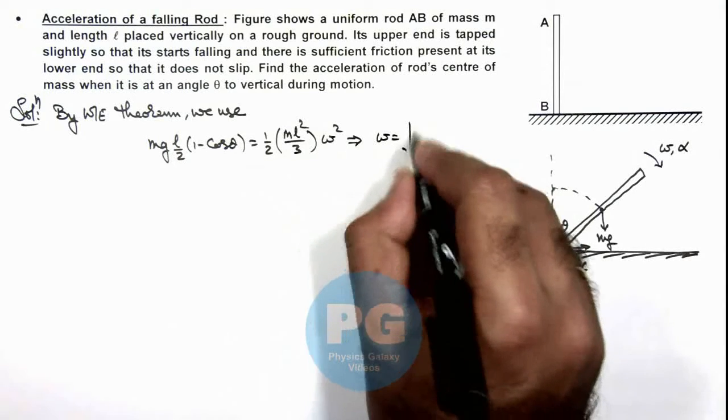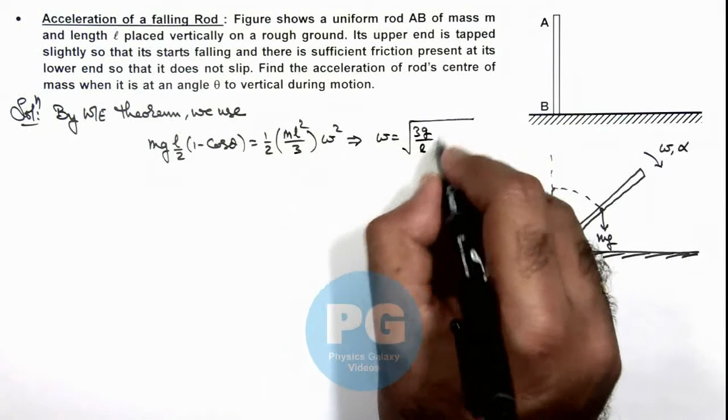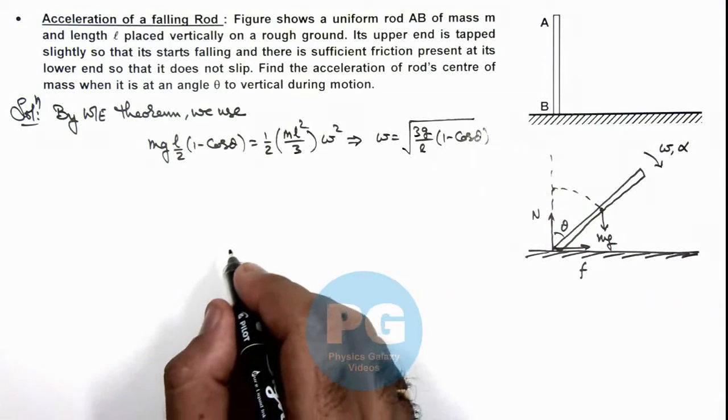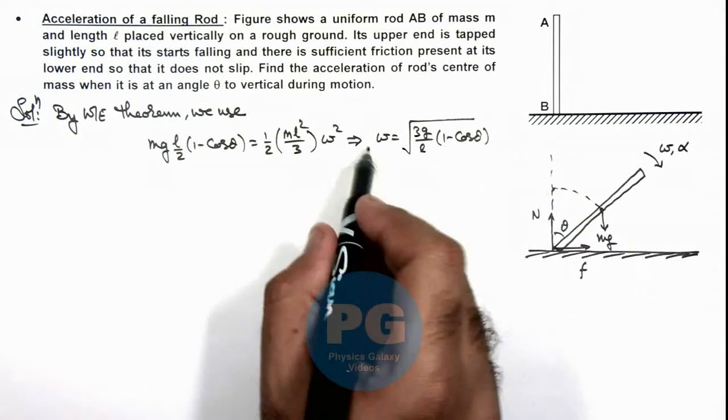This is the square root of (3g/l) multiplied by (1 - cos θ). We have got the value of omega.